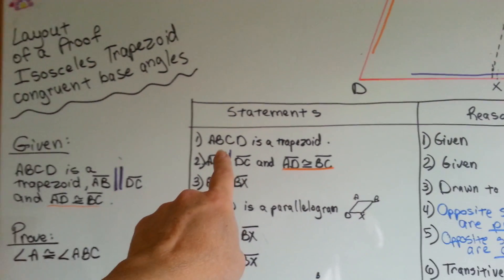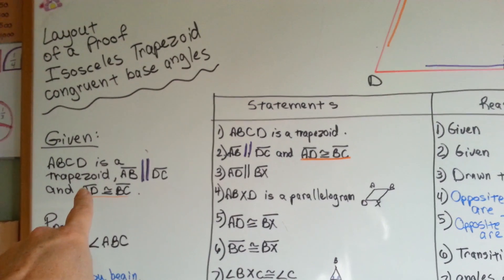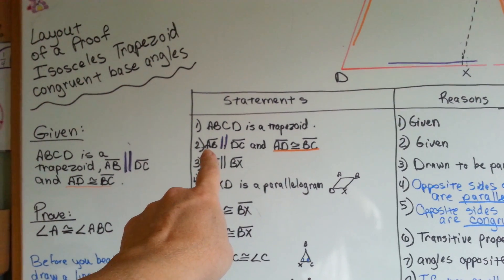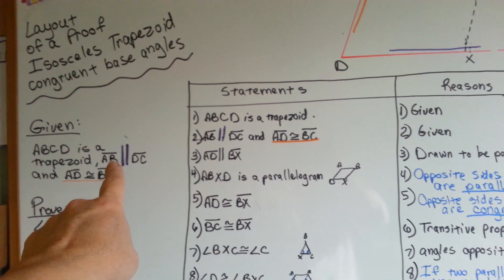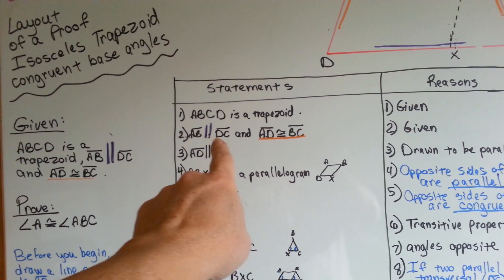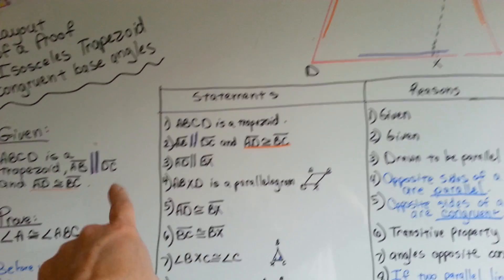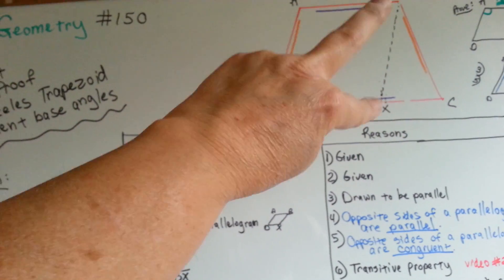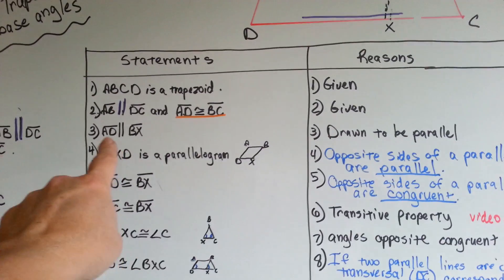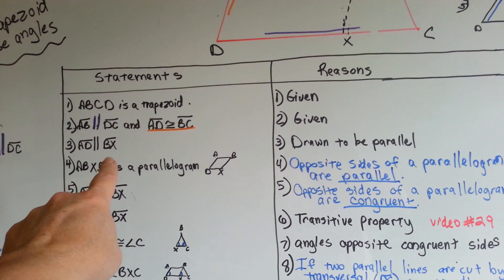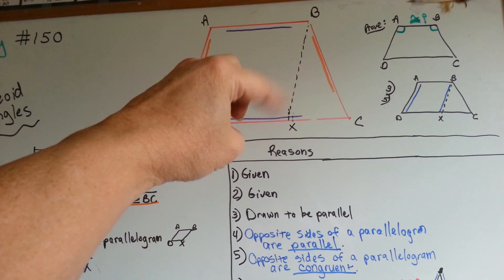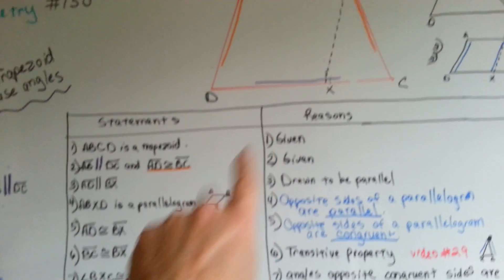The first thing we've got is that ABCD is a trapezoid — that was given. Number two: line AB is parallel to DC — that's given. Number three: AD is congruent to BC — also given. These are congruent and these are parallel. Number four: AD is parallel to BX, because we drew them to be parallel, to help us solve this.